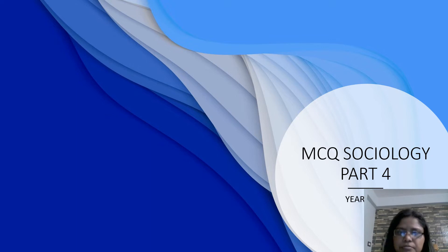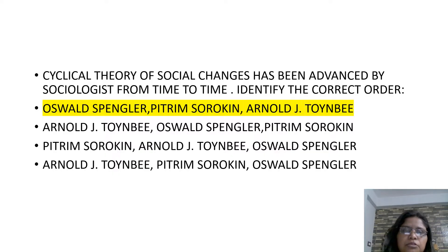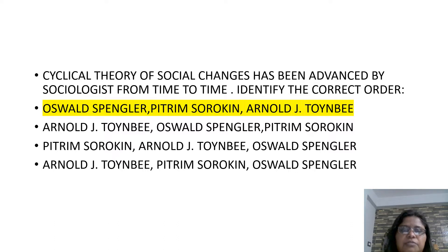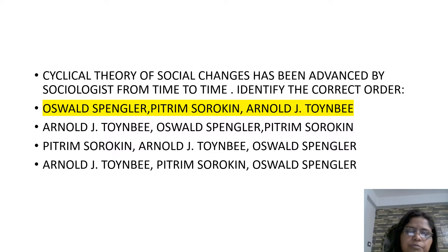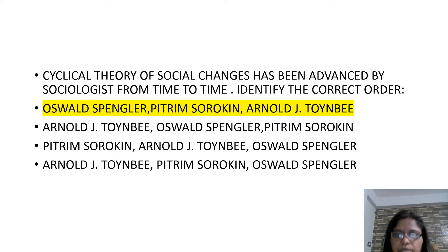The cyclical theory of social change has been advanced by sociologists from time to time. Identify the correct order: the first one is Oswald Spengler, then Sorokin, and then Toynbee.